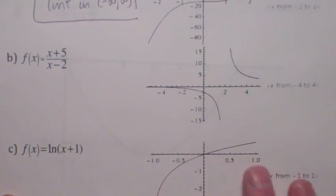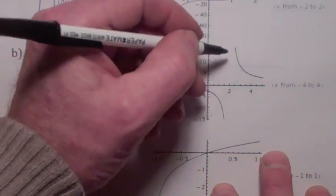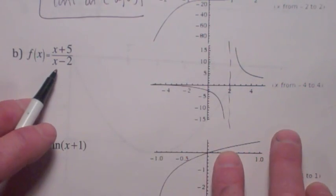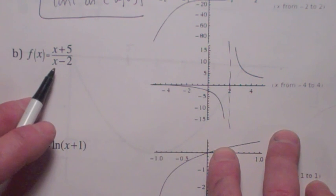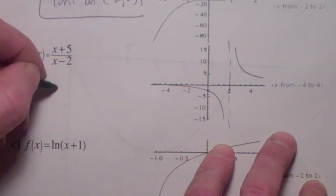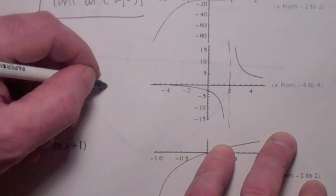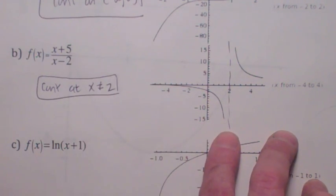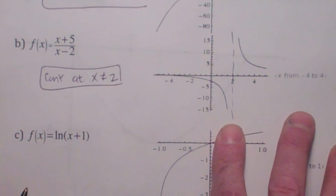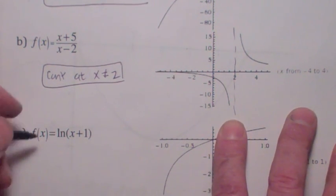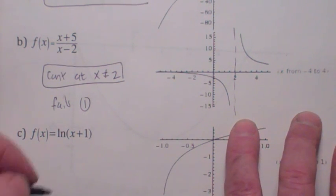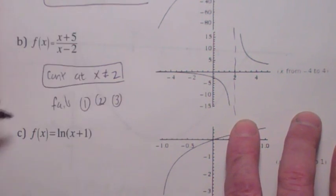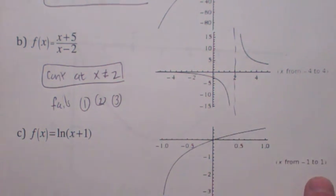Rational function — this one isn't continuous at x equals 2. There's a vertical asymptote there. However, it is fair to say it's continuous on its domain — continuous everywhere except at x equals 2. So you'd say continuous at x not equal to 2. Now, which of the three conditions has failed? Is the function defined at 2? No, so it fails the first condition. Does the limit exist? No, so it fails the second condition. Obviously it fails the third one also.